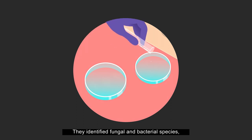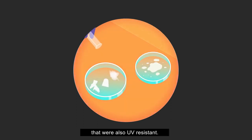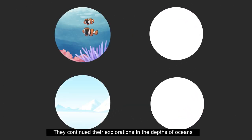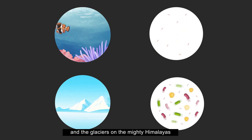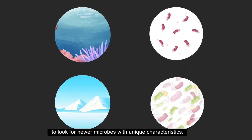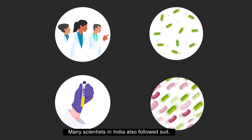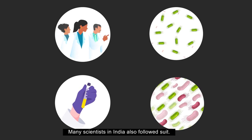They identified fungal and bacterial species, some of them even new ones that were also UV resistant. They continued their explorations in the depths of the oceans and the glaciers in the mighty Himalayas to look for newer microbes with unique characteristics. Many scientists in India also followed suit.